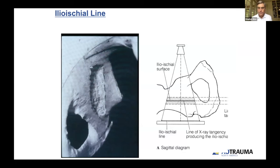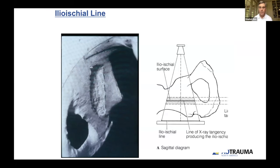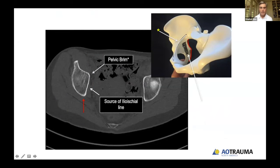The ilioischial line is not a structure at all — it's basically just an area where the x-ray beam happens to be tangential to the pelvis on the quadrilateral surface. To make this line disappear, we basically remove this section of bone on the quadrilateral surface and the line goes away. It's not uncommon to have an area along this quadrilateral surface where with an anterior column or anterior wall fracture, a piece can flip out in combination with the quadrilateral surface and disrupt the ilioischial line even though it's an anterior fracture.